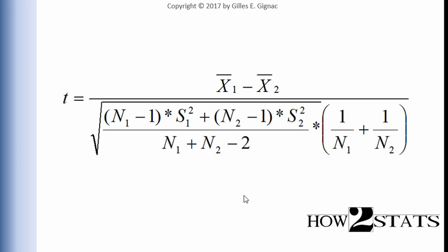Here we can see another version of the independent sample t-test that I do not prefer. I find the denominator portion to be rather large, substantial and unnecessarily so, but it is the case that this denominator portion of the independent sample t-test formula is the standard error of the difference between two sample means.